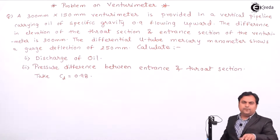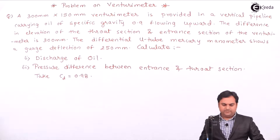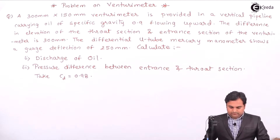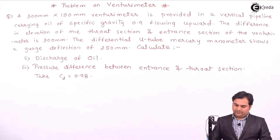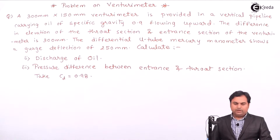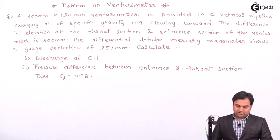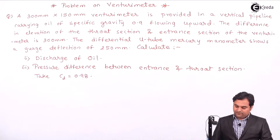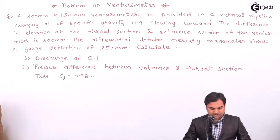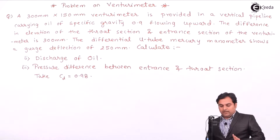Hello friends. In this video we'll see a problem on a venturimeter. A 300 mm x 150 mm venturimeter is provided in a vertical pipeline carrying oil of specific gravity 0.9 flowing upward. The difference in elevation of the throat section and entrance section is 300 mm. The differential U-tube mercury manometer shows a gauge deflection of 250 mm. Calculate: number one, discharge of oil; second, pressure difference between entrance and throat section.